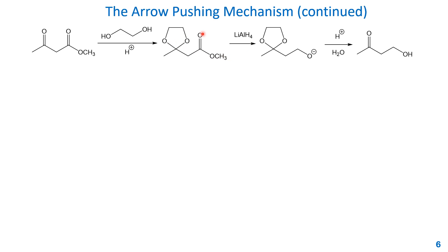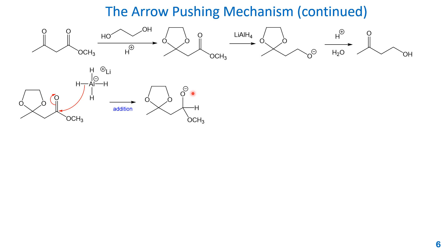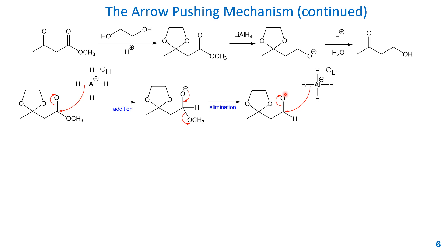Now with the protected intermediate — where the ketone has been converted to a cyclic acetal — the hydride can react with the ester. It adds to the ester, pushing the pi electrons to the oxygen. Then the methoxide is kicked off as a leaving group to form an aldehyde intermediate. The hydride reacts with that aldehyde again: attacking the electrophilic carbon and pushing the pi electrons to the oxygen, forming an alkoxide.